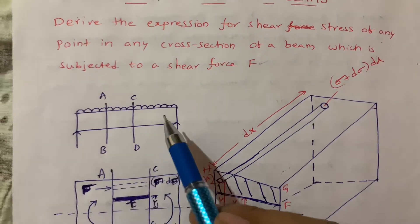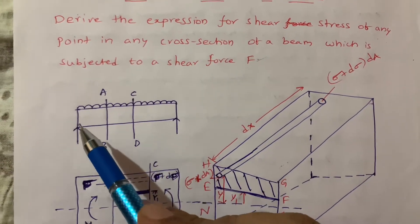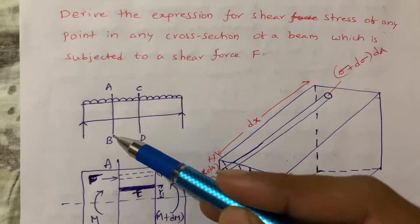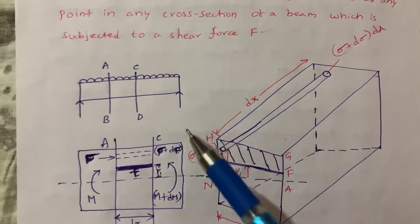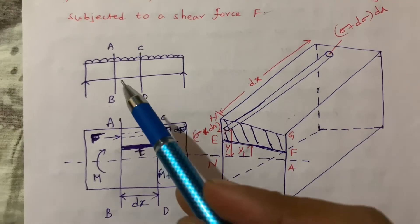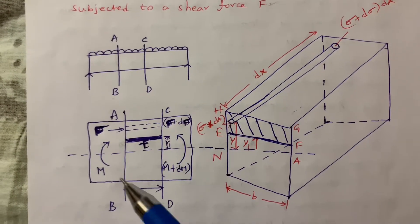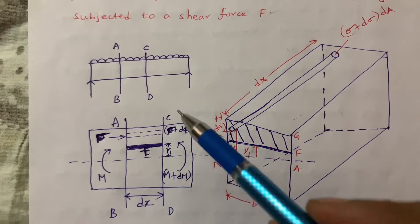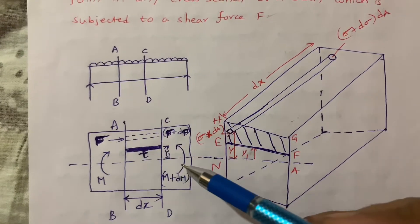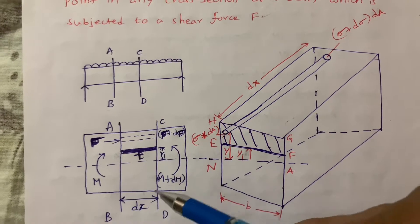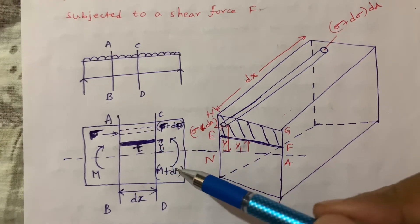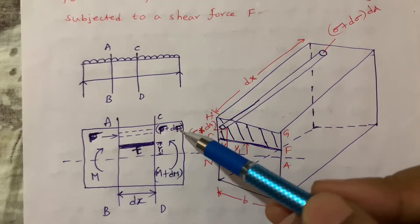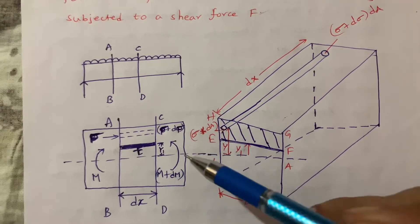I am considering a beam which is simply supported acting under UDL. I am taking two sections AB and CD, and the length between these two sections is DX. This is one moment when we apply load — a simple bending. There is one moment at section AB and another moment M plus DM, sigma is the stress, and sigma plus D sigma is another stress.